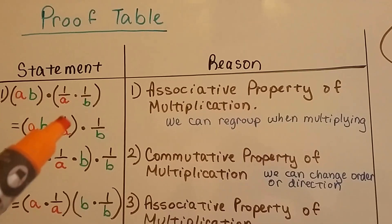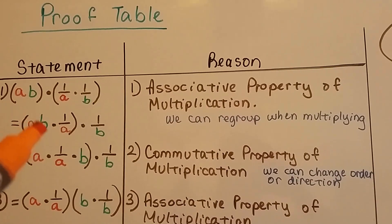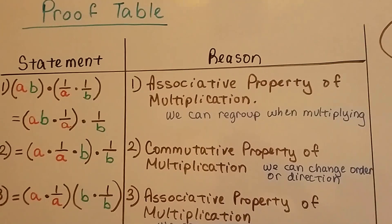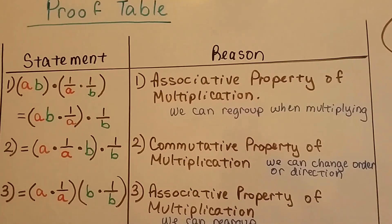Now we put 1 over a next to the a and put the b back here. Now it's being multiplied by 1 over b. Commutative property of multiplication says we can do that—we can change direction.